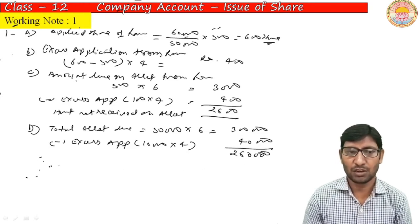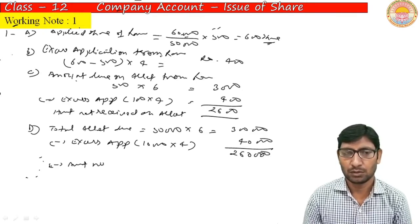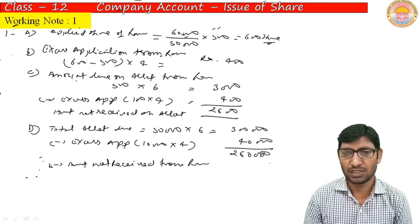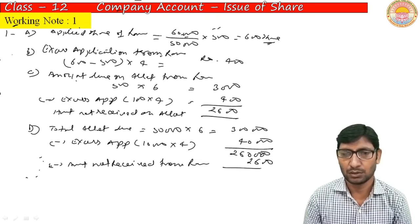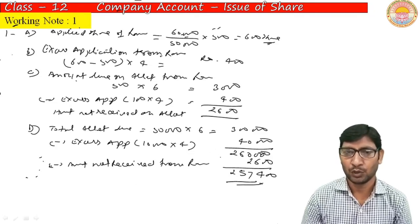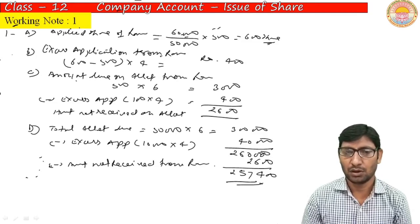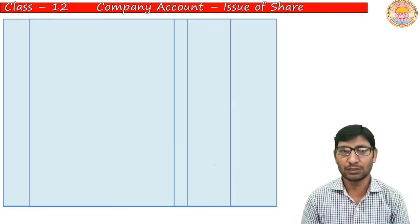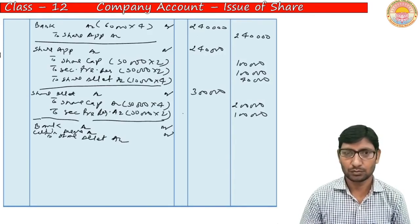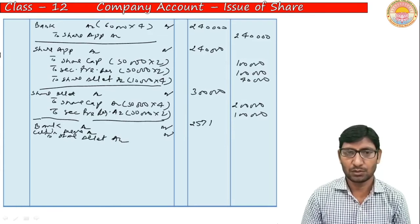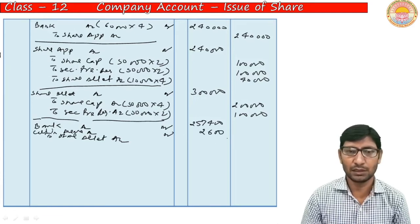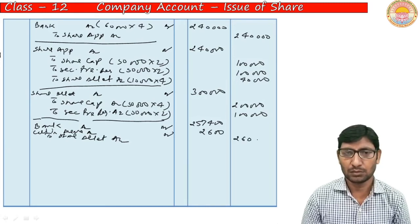Amount not received from Ram on allotment = Rs. 2,600. Amount actually received on allotment = Rs. 2,60,000 − Rs. 2,600 = Rs. 2,57,400. So calls-in-arrears = Rs. 2,600 and realized amount = Rs. 2,57,400. This treatment will be done in the journal entries.